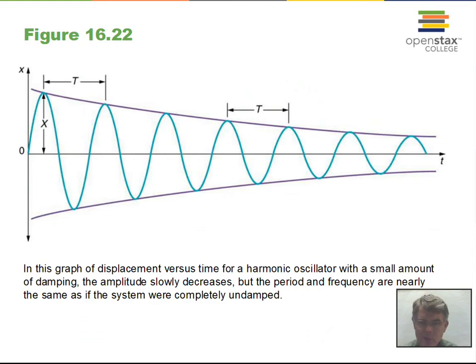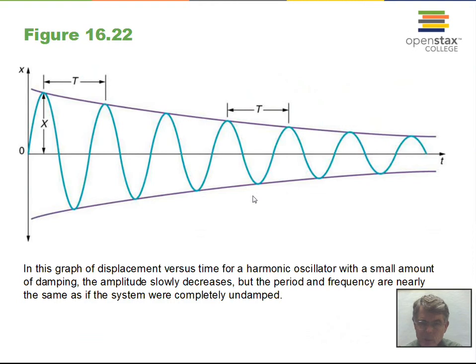With damped harmonic motion, the object does not return to the full amplitude — each cycle the maximum x value decreases. The energy of the system, calculated as ½kx² at the endpoints, gets smaller every cycle. This is due to friction dissipating energy: converting mechanical energy to thermal energy — warming the surface or the surrounding air — so the amplitude steadily decreases.